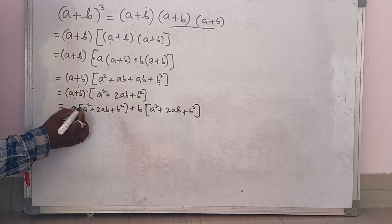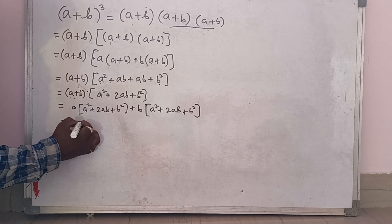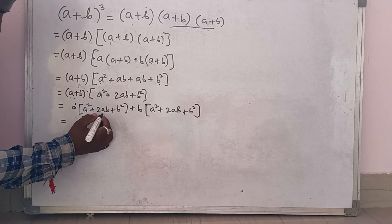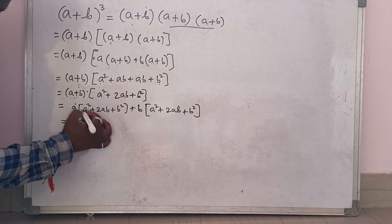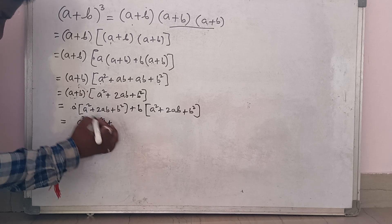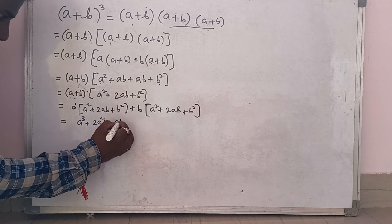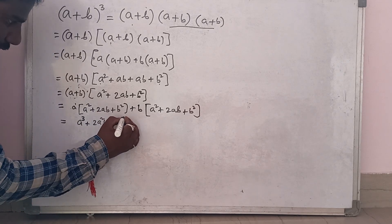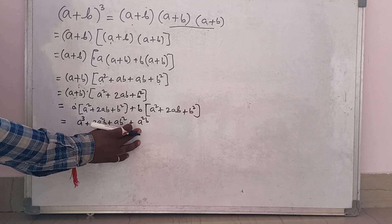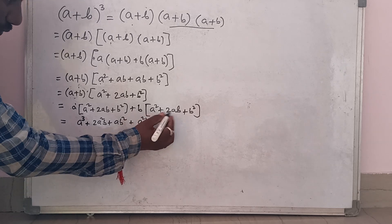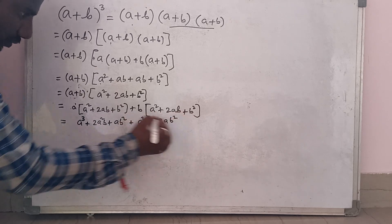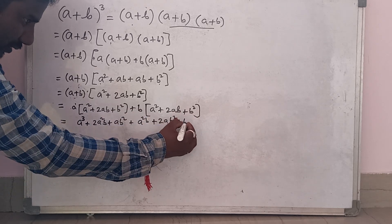Now we multiply: a into a square is a cube — when bases are the same, powers are added. A into 2ab is 2a square b. A into b square is ab square. Then b into a square is a square b. B into 2ab is 2ab square. B into b square is b cube.